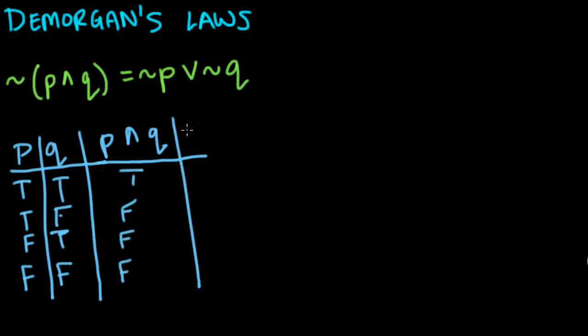Now, what happens if we take, if we negate that? So not P and Q. Okay, so that means we have the opposite. So instead of true, we have false. Instead of false, false, and false, we have true, true, and true.